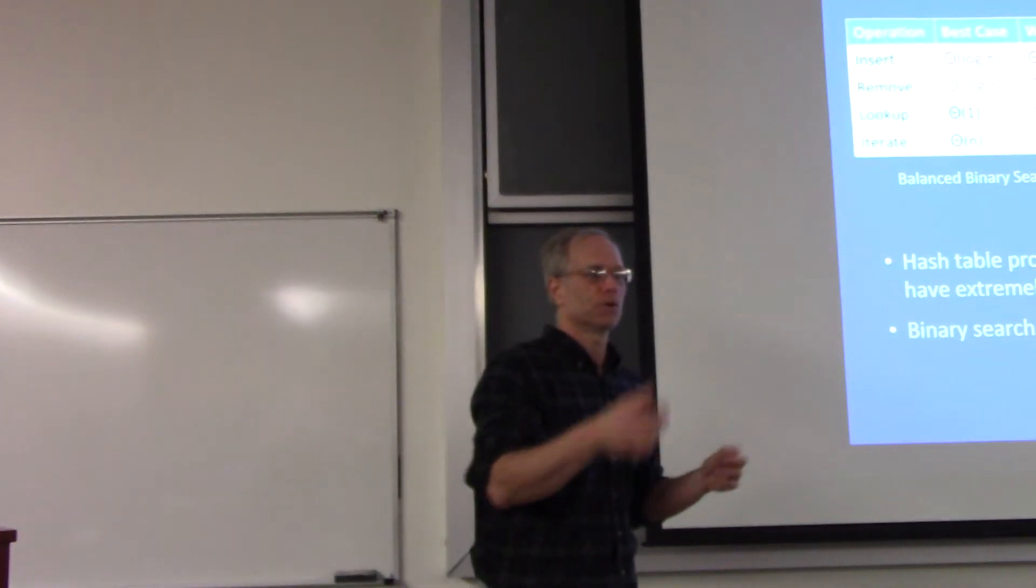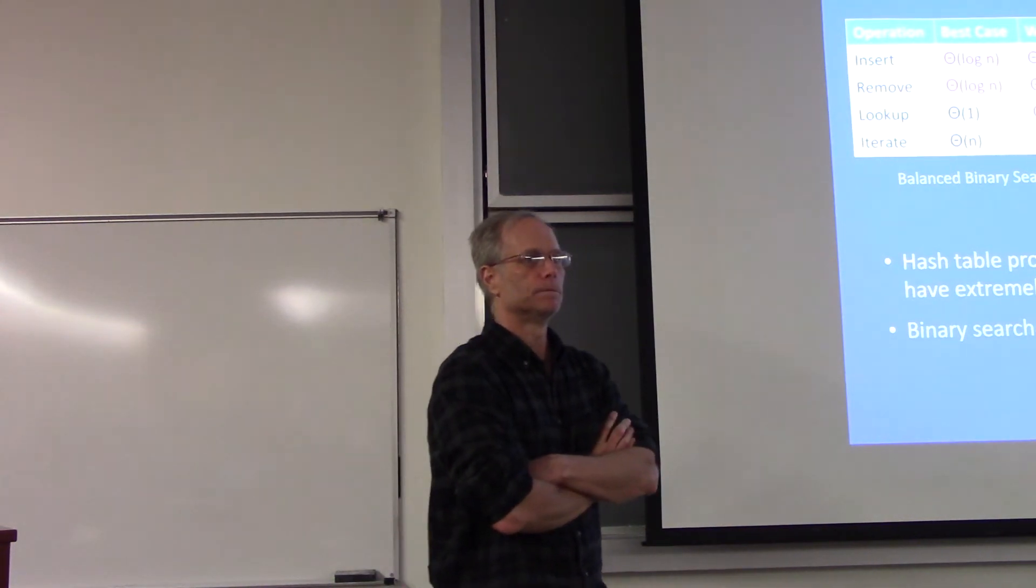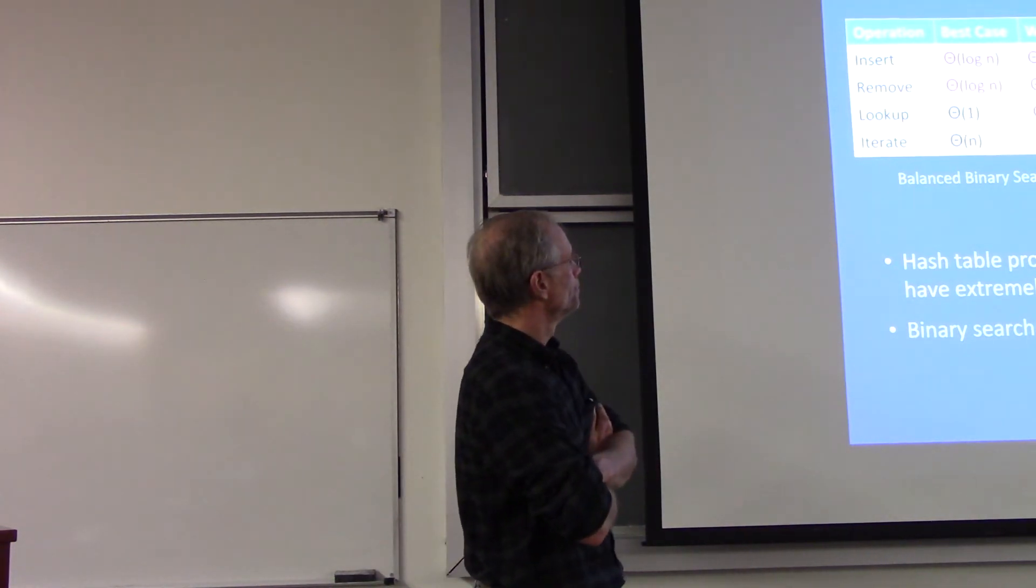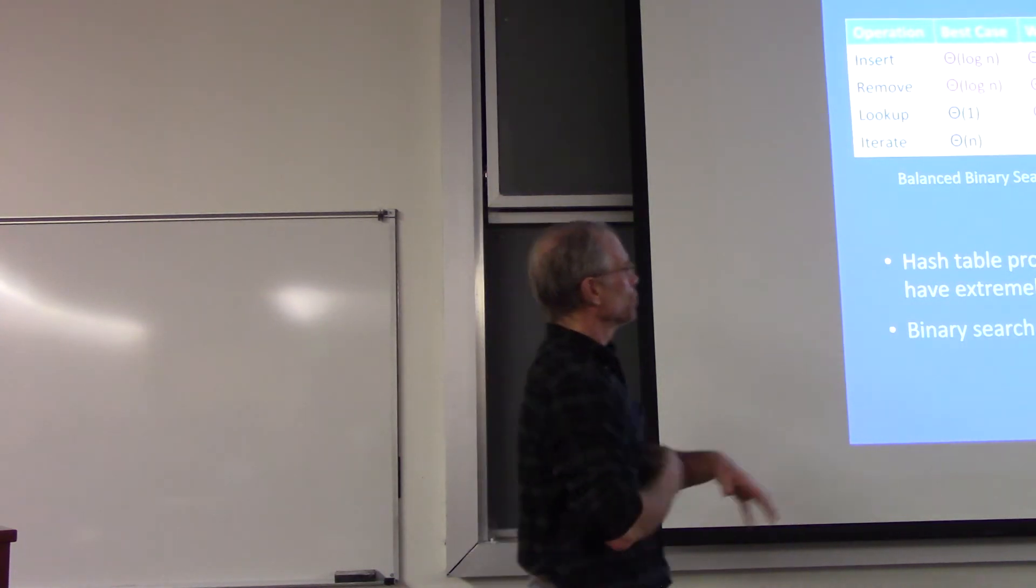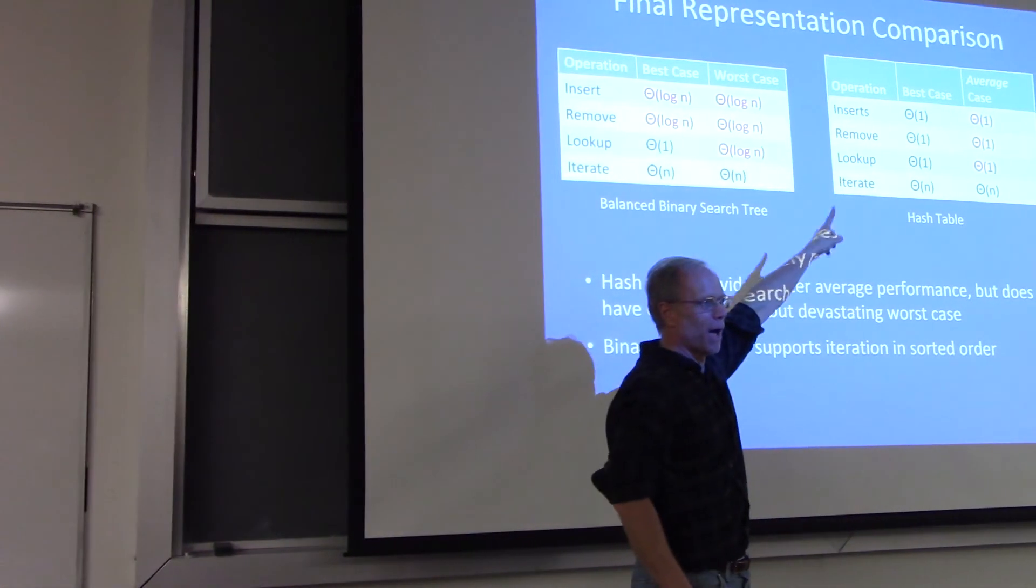So if you've got the choice of the two, use a hash table unless you need the sorted order. I was going to say consistency, as well. You can hope the best and the worst case for the binary search tree are log n, whereas you have the chance that your worst case will show up in a hash table.